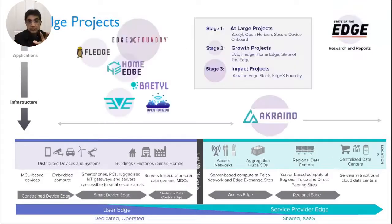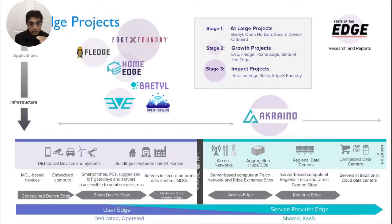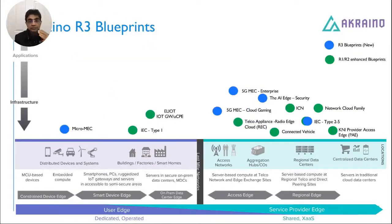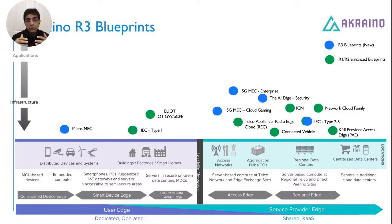Proximity, responsiveness, and mobility are the key factors defining the edge. There are about nine projects under LF Edge, each providing specific value to the community. Akraino, as an integration project, provides end-to-end declarative configuration in the form of blueprints — such as connected car, cloud gaming, or micro MEC implementations. There are about 20 blueprints already in Akraino and growing by the day.